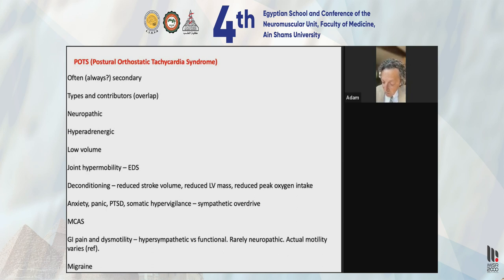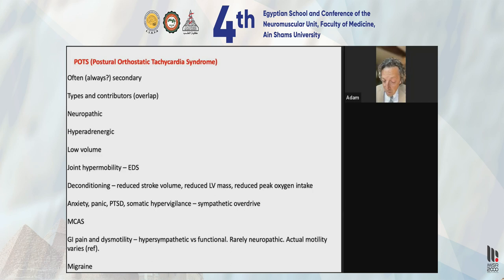Two common features of POTS that are almost always present are GI pain and dysmotility. An excess fight-or-flight or adrenergic state would be expected to alter peristalsis and vagal input to the enteric nervous system. Migraine is another very common feature of POTS, likely because of abnormal, inappropriate adrenergic responsiveness and vasomotor tone affecting the meninges, head, neck, and brain.